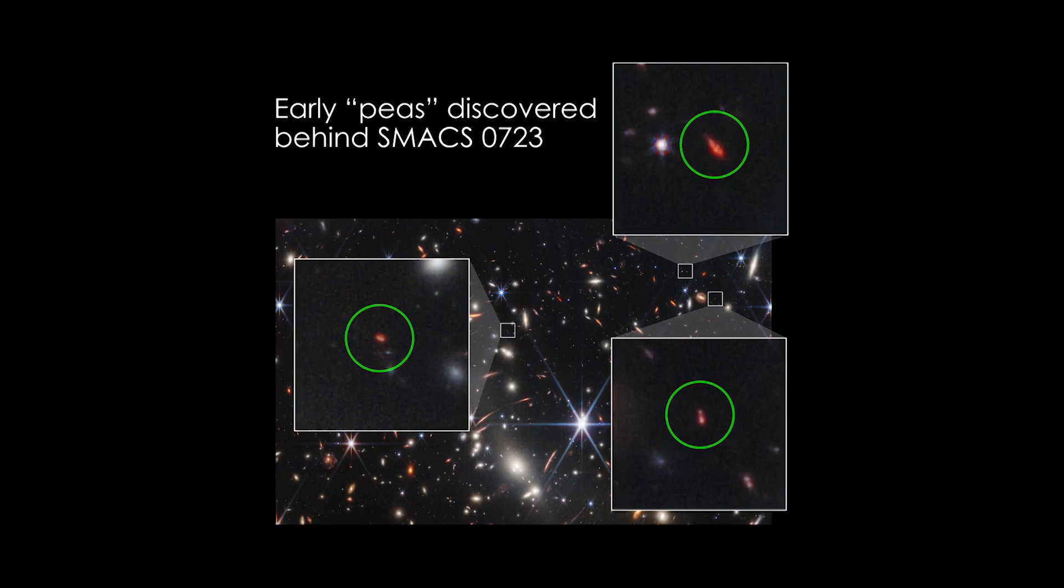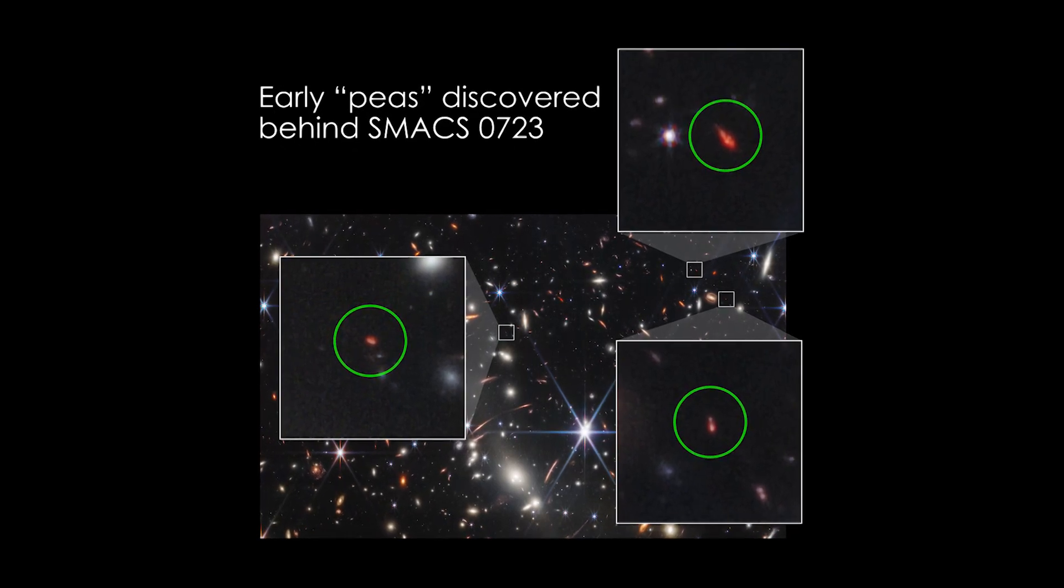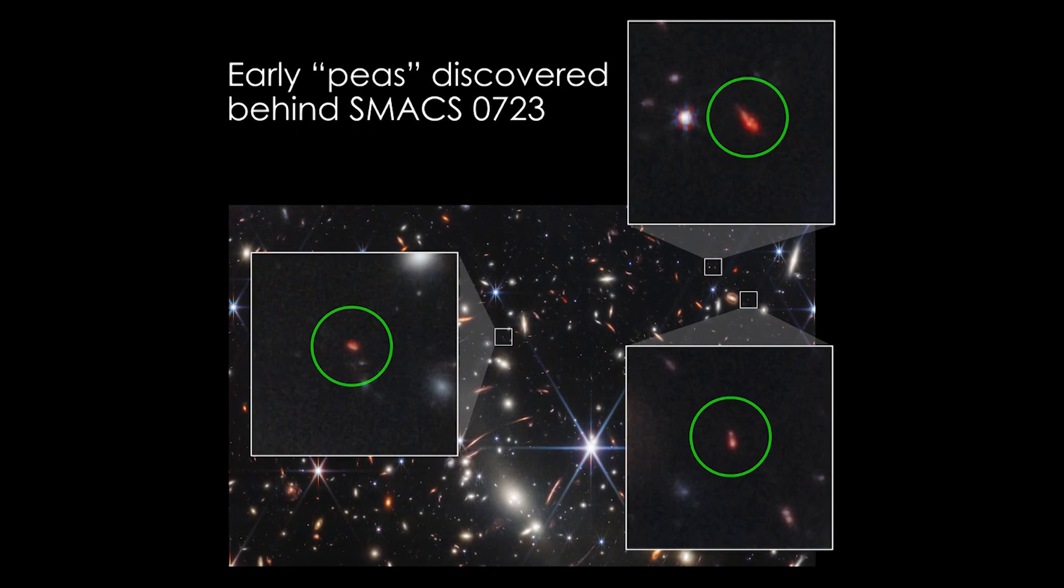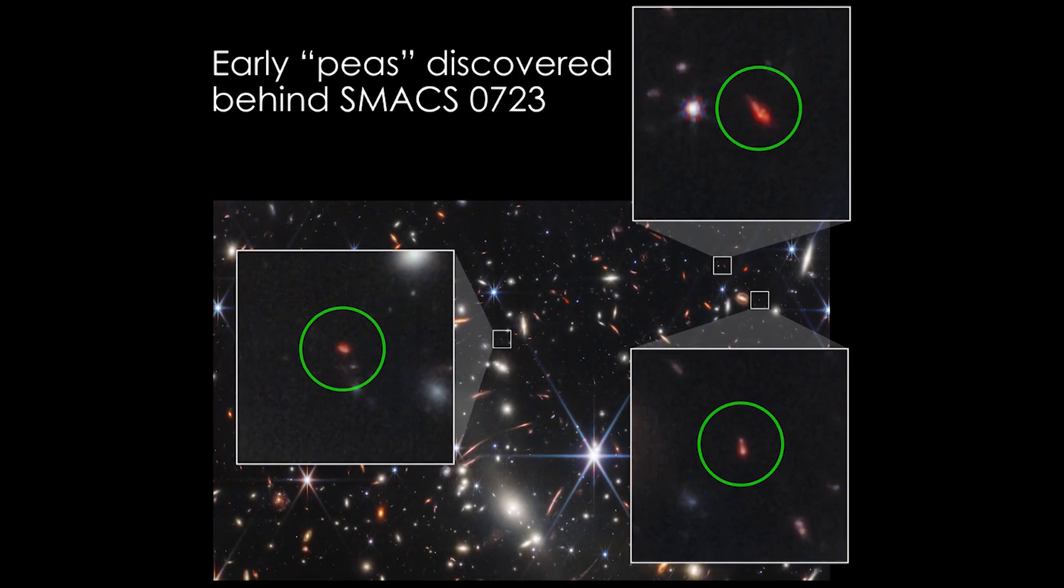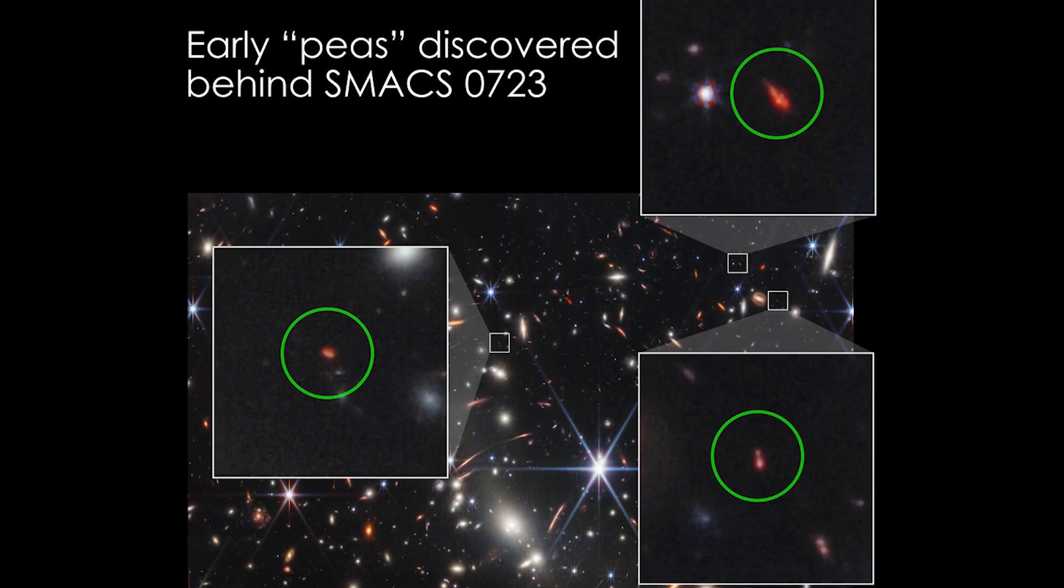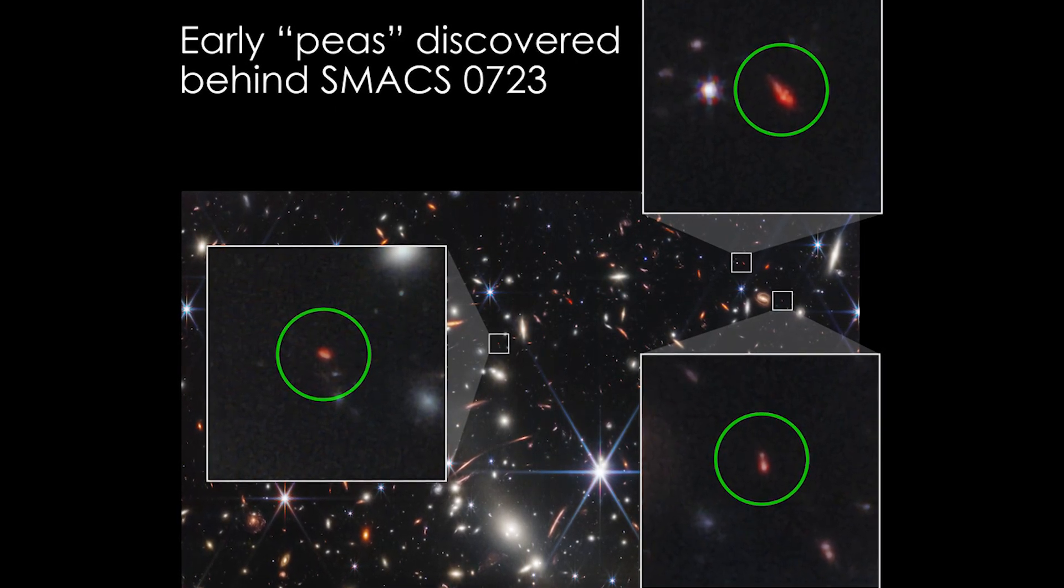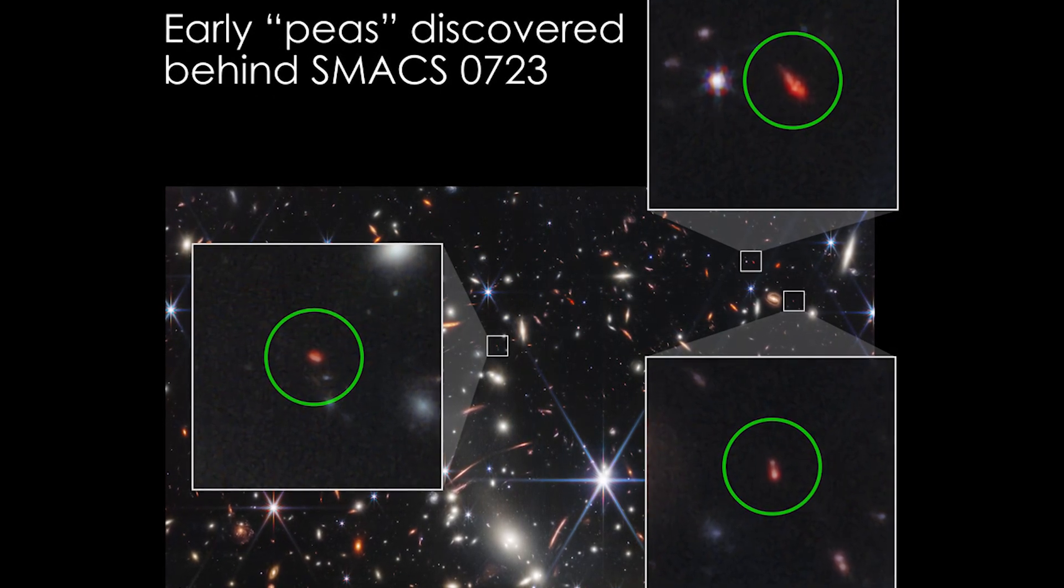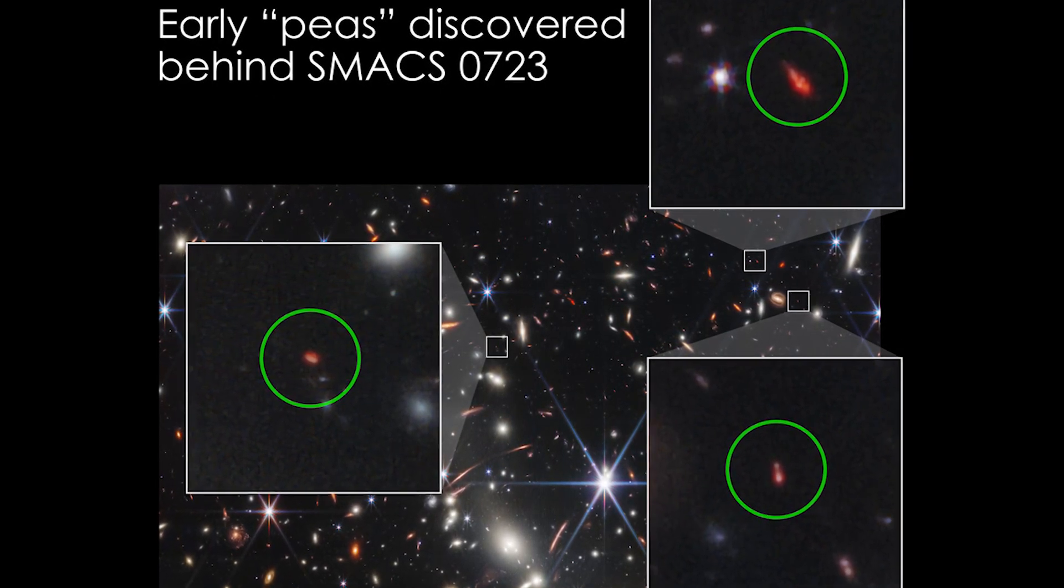Two of the Webb galaxies contain oxygen at about 20% of the level in our Milky Way. They resemble typical green peas, which nevertheless make up less than 0.1% of the nearby galaxies observed by the Sloan survey. The third galaxy studied is even more unusual, with an oxygen abundance a hundred times lower than that of typical green peas.